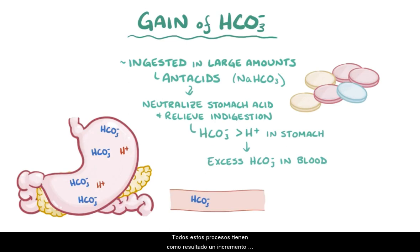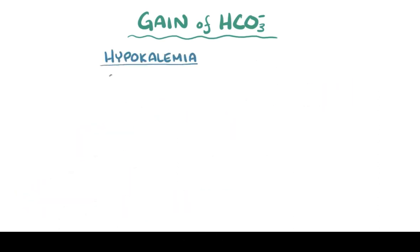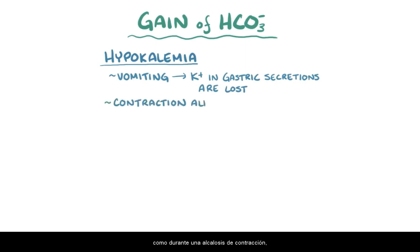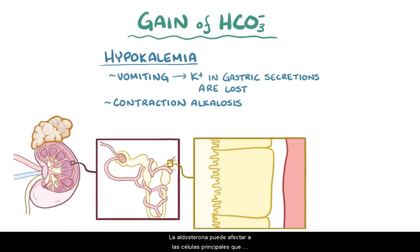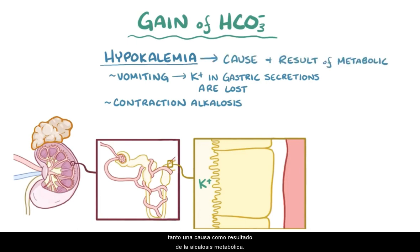All these processes have a net result of increasing the bicarbonate ion concentration in the blood, which increases blood pH. But in addition, there's often a hypokalemia. In vomiting, for example, potassium ions in the gastric secretions are lost. In other situations, there's an increase in aldosterone, like during a contraction alkalosis or when there's an adrenal tumor. The aldosterone can affect principal cells which line the distal convoluted tubule and collecting ducts, making them excrete potassium into the urine. So essentially, hypokalemia can be both a cause and a result of metabolic alkalosis.